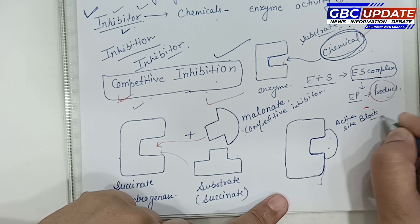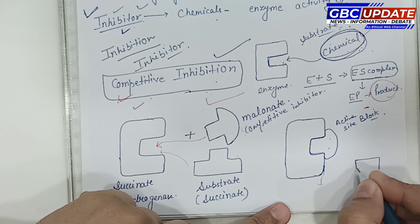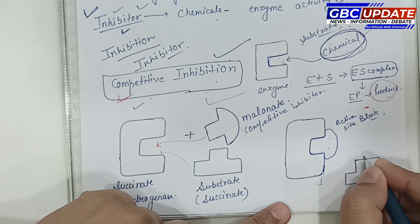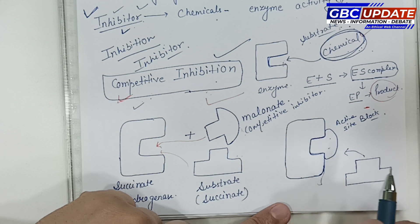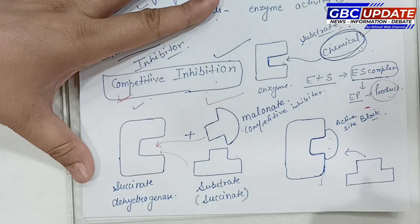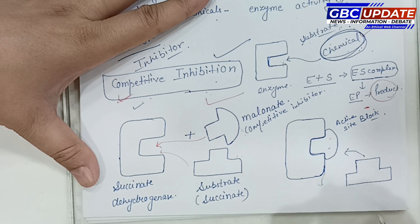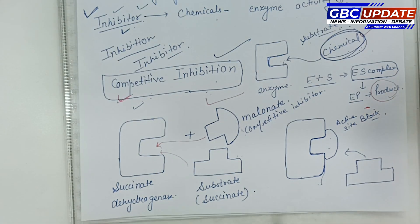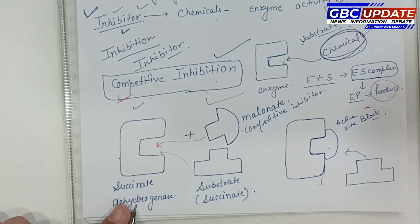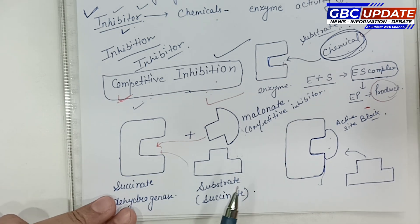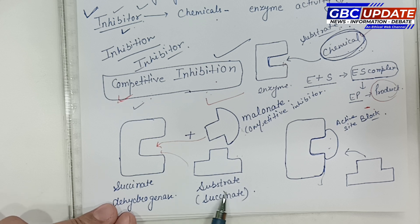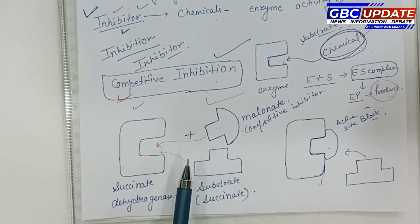When the inhibitor binds to the active site, it blocks the substrate from attaching. The enzyme-inhibitor complex does not yield any product, stopping enzymatic activity. So with succinate dehydrogenase, malonate acts as a competitive inhibitor by attaching to the active site and preventing substrate binding.